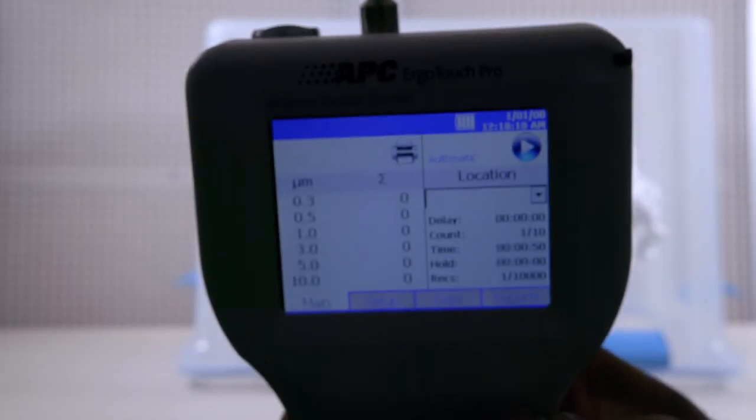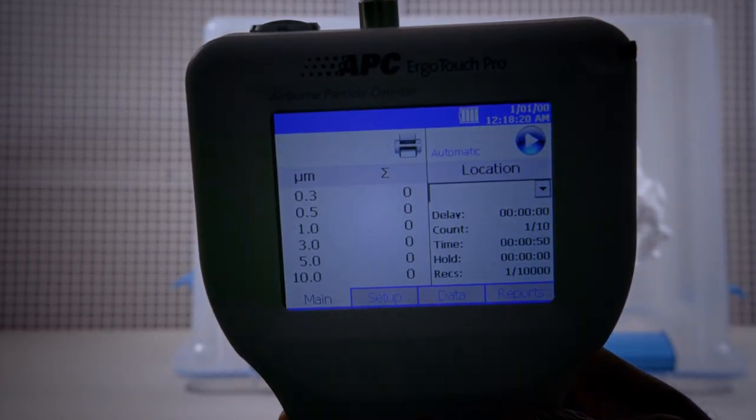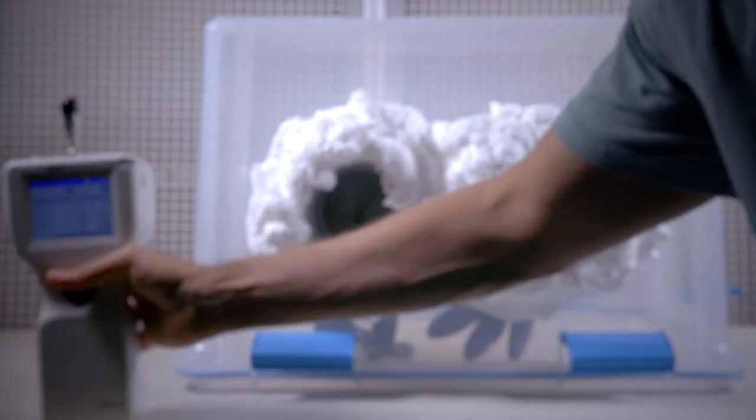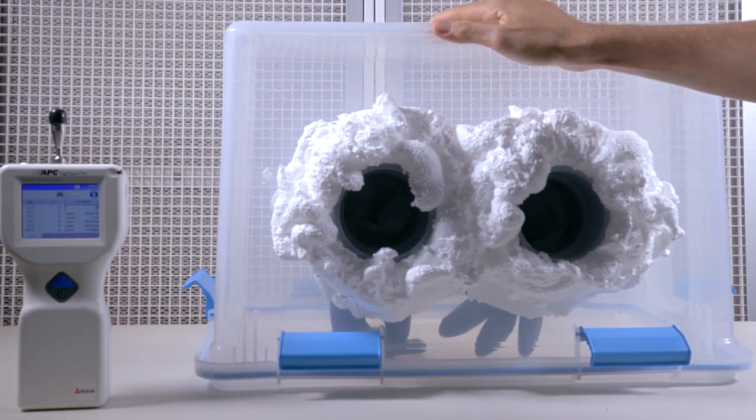Now that we have an idea of our ambient reading, let's start the second run with our still air box. We've already zeroed out the unit with our HEPA filter attachment. Now we'll place the air particle counter into our still air box, and close it off to create an airtight seal.